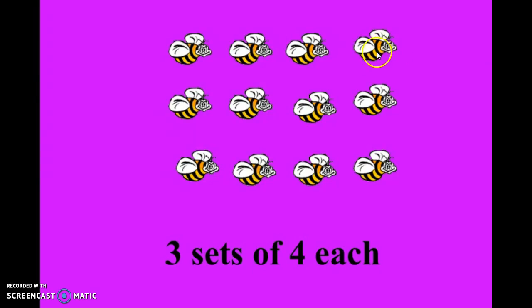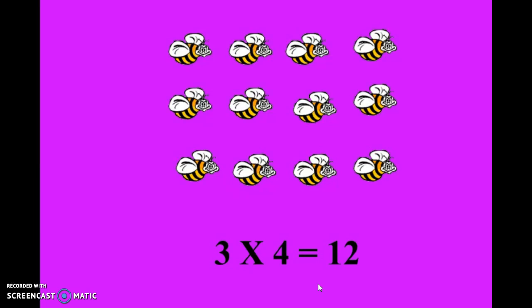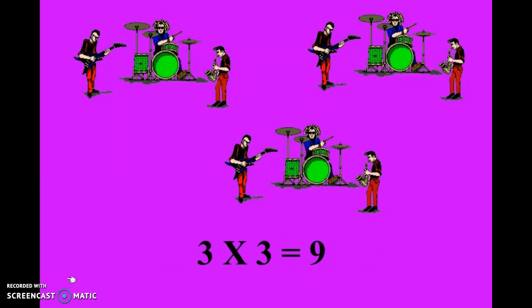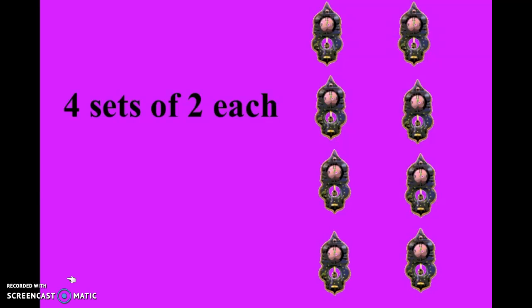We have three sets of four each — three sets of four beans — so three times four equals twelve. Now we have three sets of three each. We have at least three people in each group, and we have one, two, three groups. So three times three equals nine — altogether there are nine people.